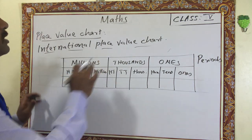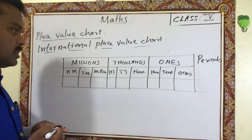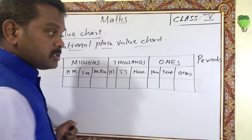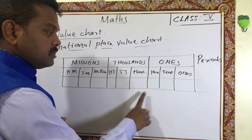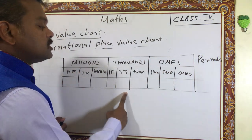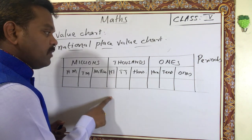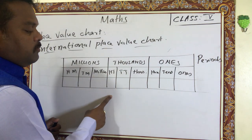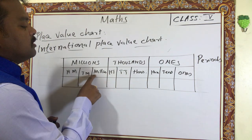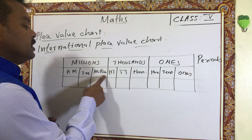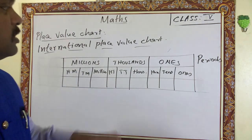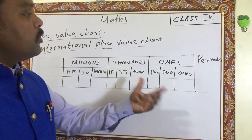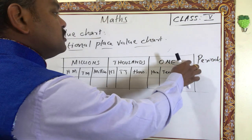Now just compare the Indian place value and international place value systems. In the Indian place value system: ones, hundreds, thousands, ten thousands, then lakh comes. Instead of lakh, in the international system we have hundred thousands. Instead of ten lakh, here it is millions, then ten millions, hundred millions, and so on. That is the difference between the two systems.